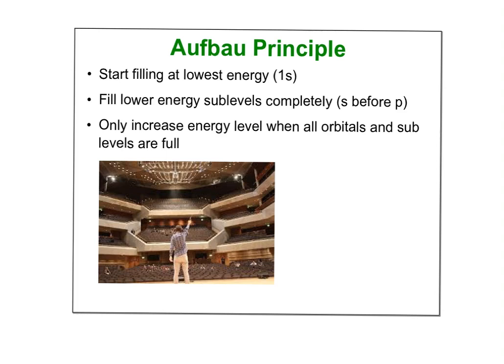Now the Aufbau principle, Hund's rule, and Pauli exclusion — these are just the rules for drawing orbital diagrams. For Aufbau, we start filling the lowest energy first, which is the 1s, and you have to fill that lower energy completely before moving on to the next. We only increase energy level when all the orbitals and sub-levels are full. To remember Aufbau, think of going to a concert — here's the stage. We start with 1s and there are two seats in that row.